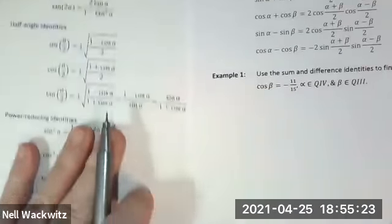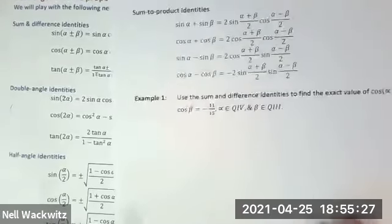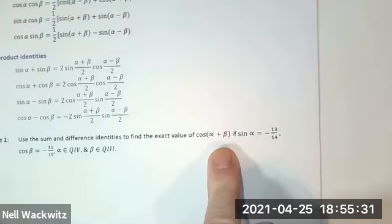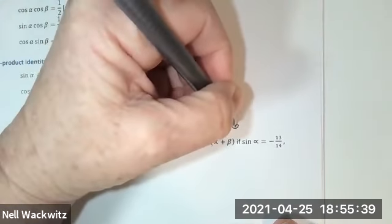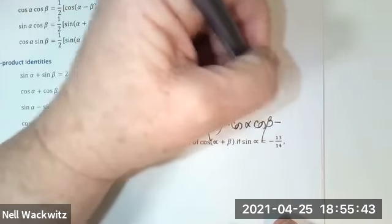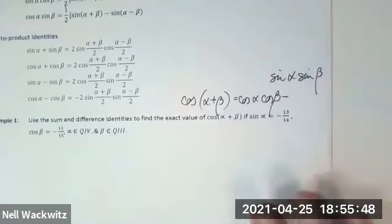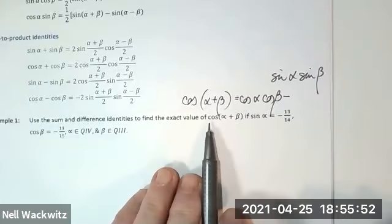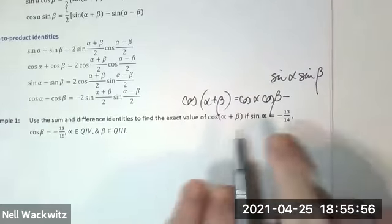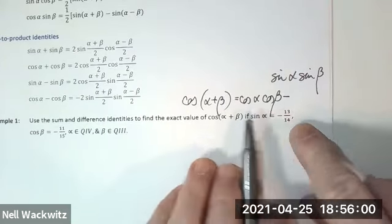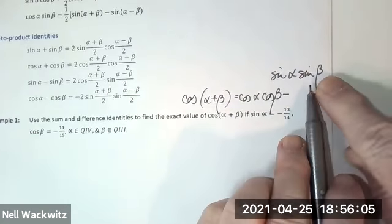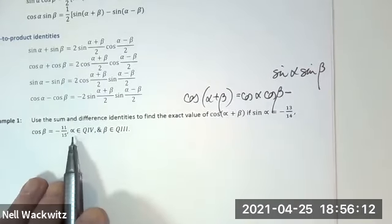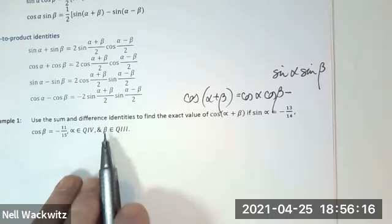So we're going to keep those three identities close at hand and work with them. The property we want to have close is the cosine of alpha plus beta: cosine alpha cosine beta minus sine alpha sine beta. The things we need in order to expand cosine of alpha plus beta are the sine of alpha, which they give us; the cosine of alpha, which they did not give us; the sine of beta, which they didn't give us; and the cosine of beta, which they did give us. They tell us alpha is in quadrant four and beta is in quadrant three.